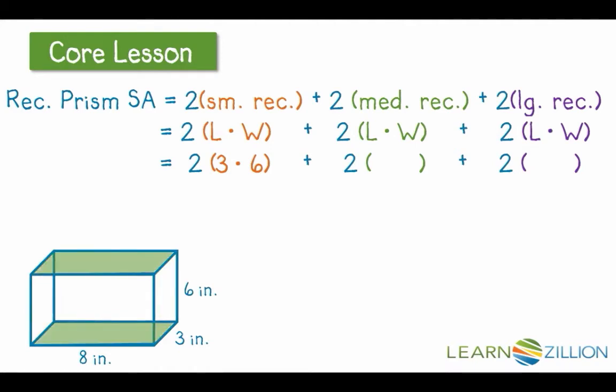Next, I see that my green rectangles, if I look real closely, have dimensions of 3 inches by 8 inches. So I'm going to make that substitution. And the final substitution I make is for my large purple rectangles, and those are 8 inches by 6 inches, or 6 by 8.